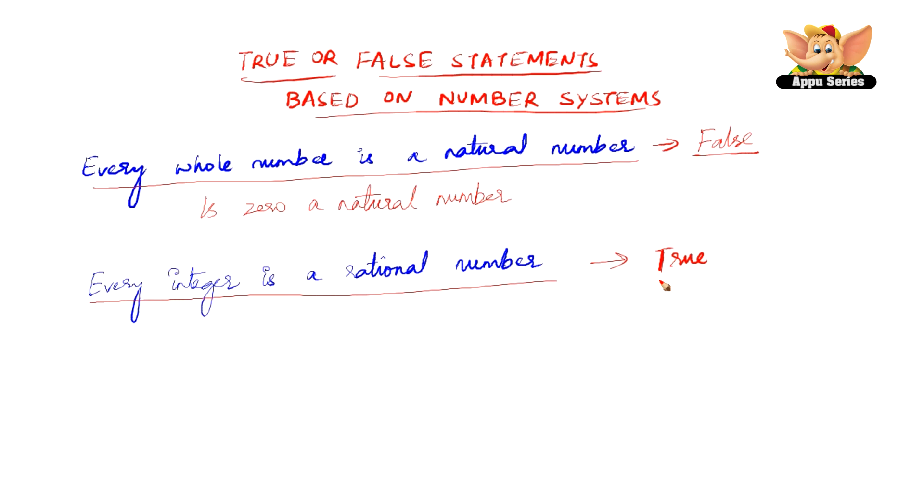Let us go to another statement, which states every rational number is an integer. Okay, this is exactly the vice versa of the last statement that we did. Every rational number is an integer. Is it true or false?